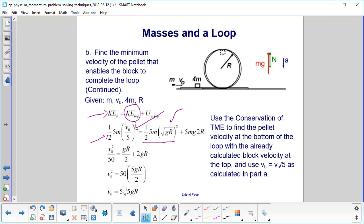And there's our velocity at the top, the square root of gr. And here's our gravitational potential energy at the top, 5mg times the height, which is 2r.